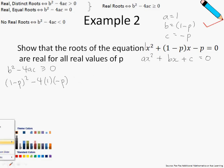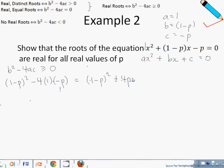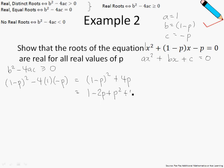Let us simplify the given expression. We get 1 minus p squared plus 4p. Expanding, this gives 1 minus 2p plus p squared plus 4p. Simplifying and rearranging, negative 2p plus 4p gives positive 2p. This is in the form A squared plus 2AB plus B squared, so we can factorize it as (p plus 1) squared.